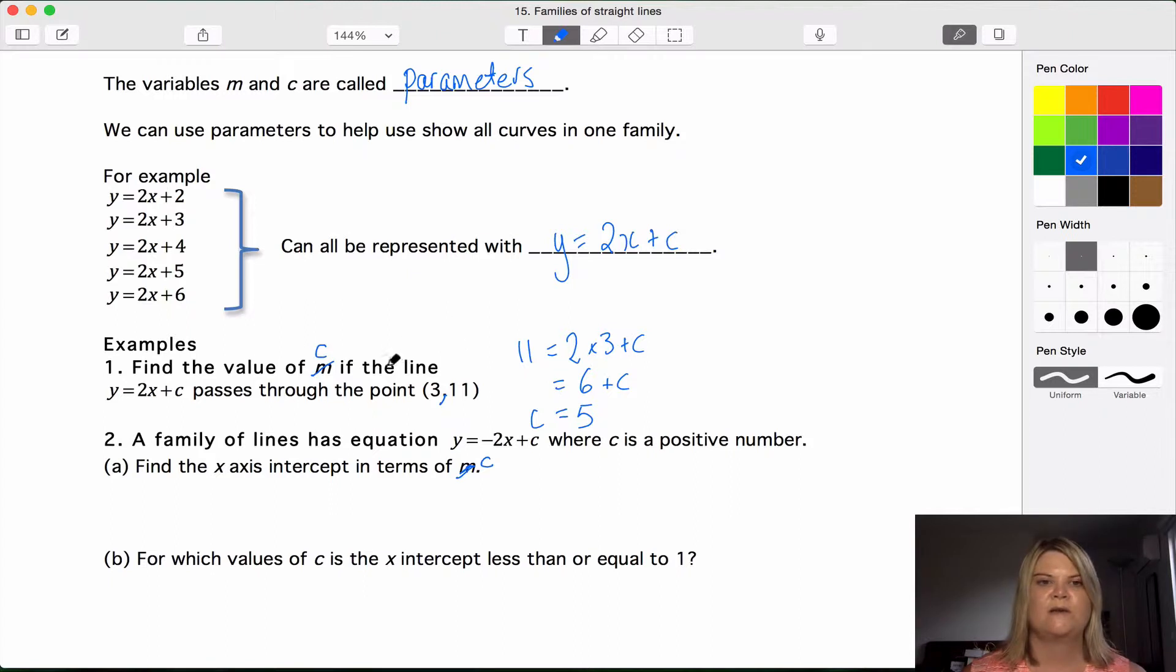Now note if this question had said find the equation of the line, if it passes through this point, your final answer would need to write out the full equation. This one here, and put your c value in. So make sure you are clearly reading what the question is asking you and you're writing the solution. So this says find the value of c, so we write c equals 5.